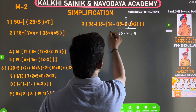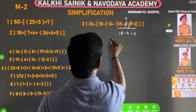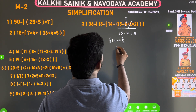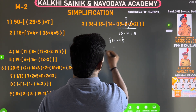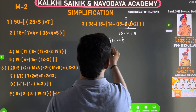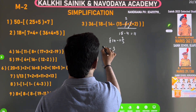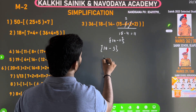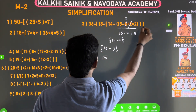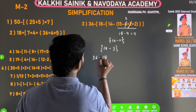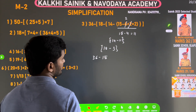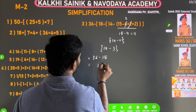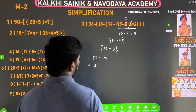15 minus 4 is 11. We have 11, and this bracket is closed. 14 minus 11 is 3. We have 3, and this bracket is closed. 18 minus 3 is 15. This bracket is closed. We have 36 minus 15 is 21. This is the category.